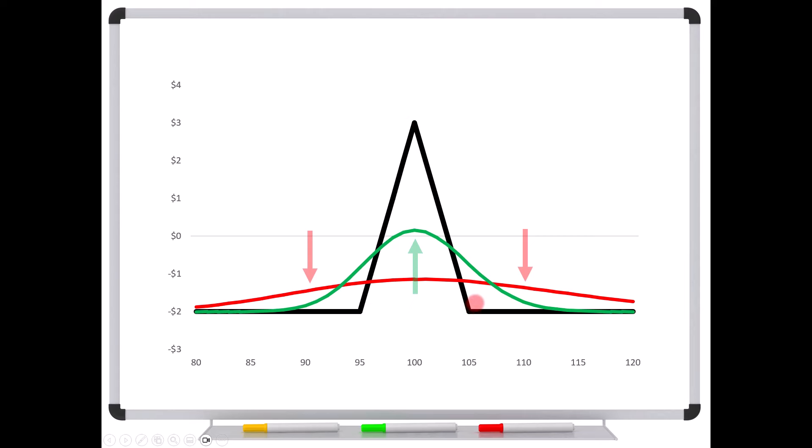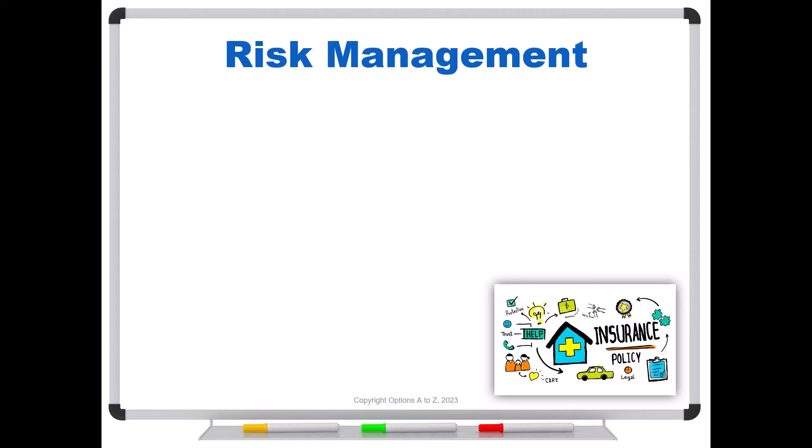And depending on your outlooks, resistance, support levels, you might not even want these symmetrical. And that's where you start getting into broken wing butterflies. That's one of the many reasons why you might use a broken wing version.